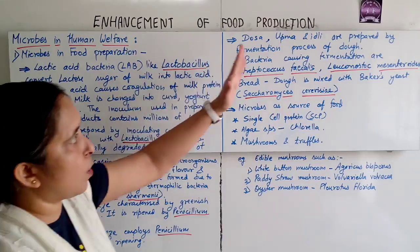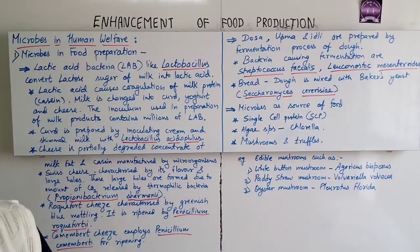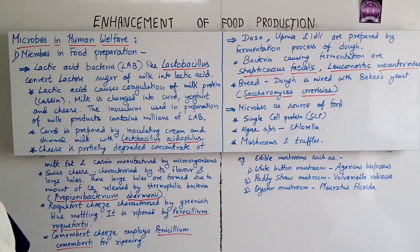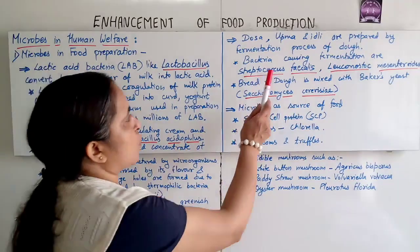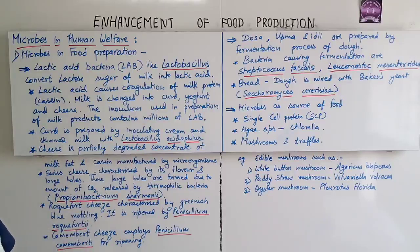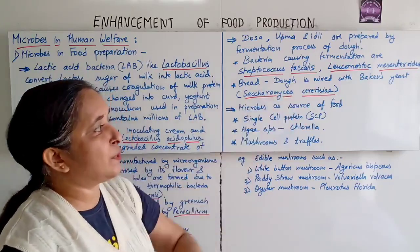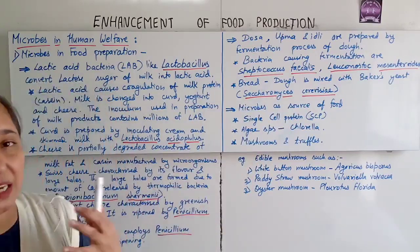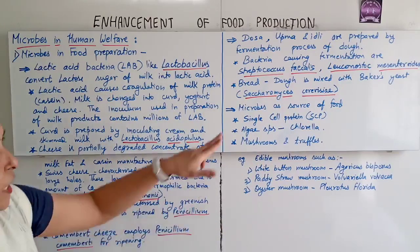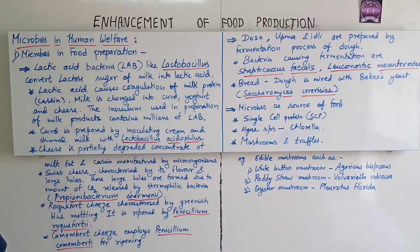Dosa, Upma, and Idli are all prepared by the fermentation process of dough. The bacteria causing fermentation are Streptococcus faecalis and Leuconostoc mesenteroides. For bread, the dough is mixed with baker's yeast, whose botanical name is Saccharomyces cerevisiae.